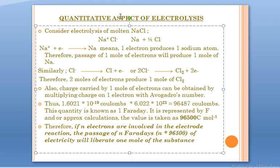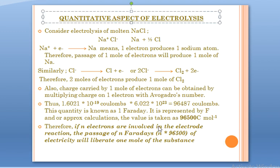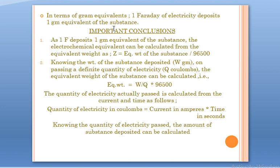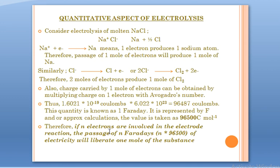If N electrons are involved in the electrode reaction, the passage of N Faradays of electricity will liberate one mole of the substance — where N Faradays = N × 96,500 coulombs. In terms of gram equivalents, a simpler statement: 1 Faraday of electricity deposits 1 gram equivalent of the substance. Pass N Faradays and you get 1 mole of the substance.